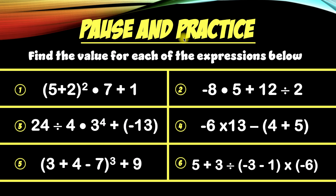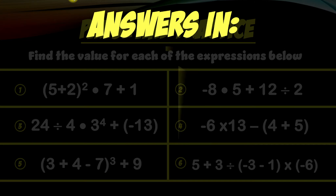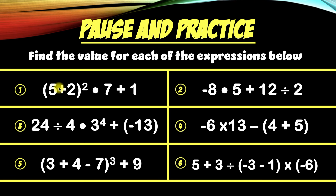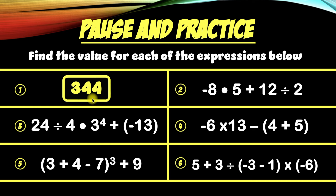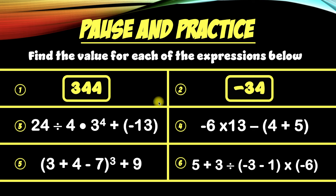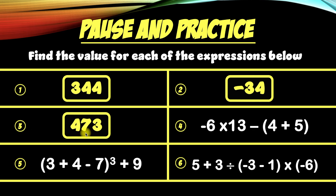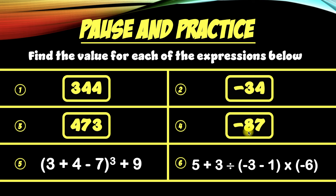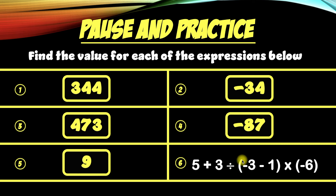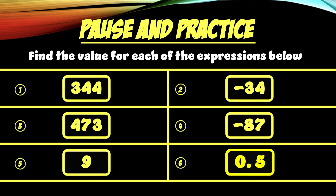Here's your pause and practice. Hit the pause button and try these questions. Then click play to reveal the answers. Number one is 344. Number two is negative 34. Number three is 473. Number four is negative 87. Number five is positive 9. And number six is 0.5, properly read as five tenths. That last one was a little bit tricky because it involved working with decimals, but as long as you work neatly and follow the order of operations, you'll get the right answer every time.